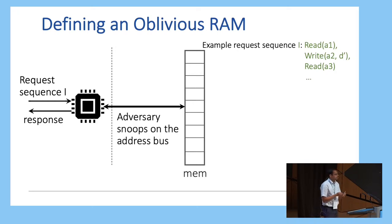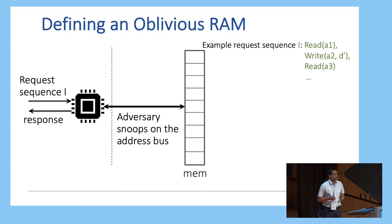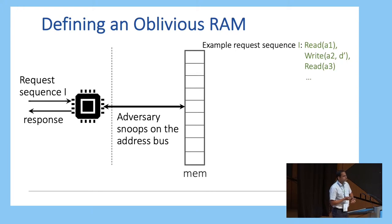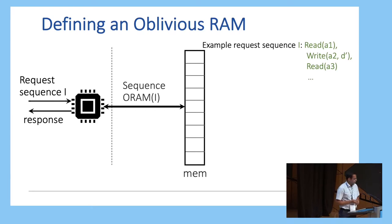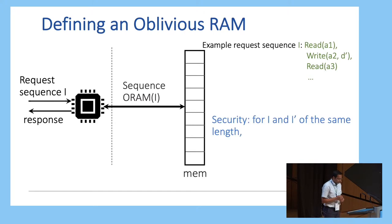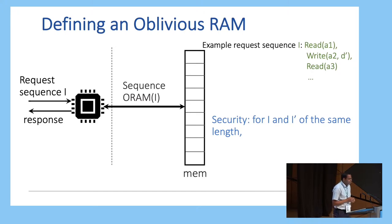We assume that you have an adversary which is snooping on your address bus, but it cannot look into the contents of the CPU or the actual contents of the data in the memory — for instance, you can think of your data as being encrypted. What you want is to convert this logical access sequence into a sequence, let's call it ORAM(I), in such a way that the adversary does not learn what I is. For security, you want that for any two access patterns I and I' of the same length, ORAM(I) is indistinguishable from ORAM(I').